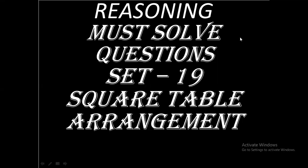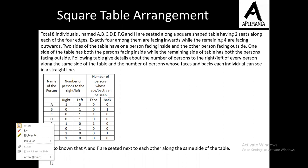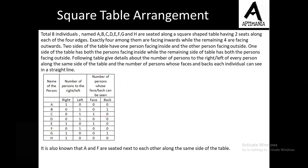In this video we are going to discuss a question based on square table arrangement. There are eight individuals: A, B, C, D, E, F, G, and H. They are seated along a square-shaped table having two seats along each of the four edges. Exactly four of them are facing inward and four are facing outward.